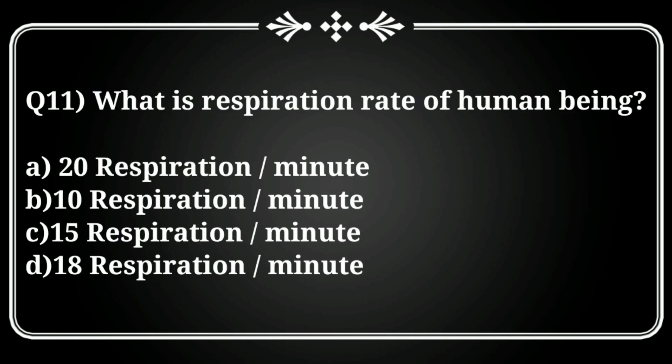Question 11: What is the normal respiration rate of a human being per minute? Options: A) 20, B) 10, C) 15, D) 18 respirations per minute. The correct answer is option D, 18 respirations per minute. That is the normal respiration rate.